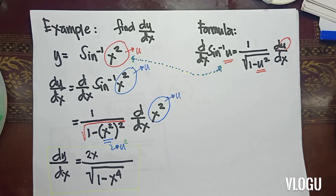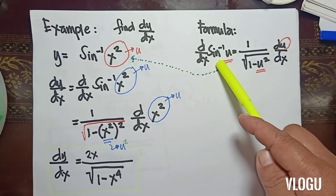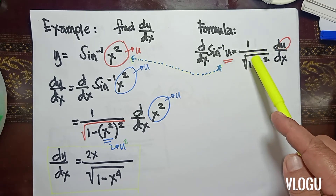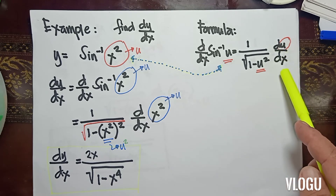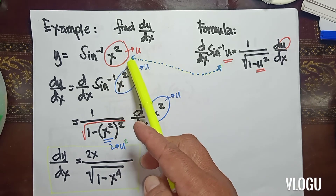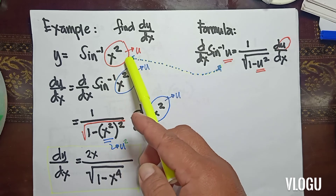Example number 1: find dy/dx where y is equal to sine inverse of x squared. The formula we are going to use is d/dx of sine inverse u, that is equivalent to 1 over the square root of 1 minus u squared times du/dx. In our example, our u is equal to x squared.